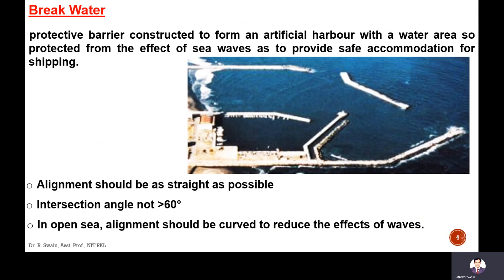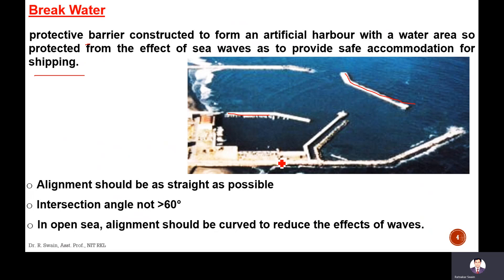So what is a breakwater? The breakwater is the protective barrier constructed to form an artificial harbour with a water area, protected from the effect of sea waves, so as to provide safe accommodation for shipping. These barriers or boundary walls are constructed, and the alignment is made as straight as possible. The intersection angle between the two breakwaters should not be greater than 60 degrees.